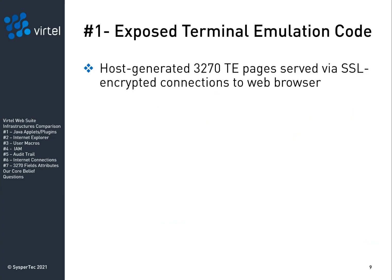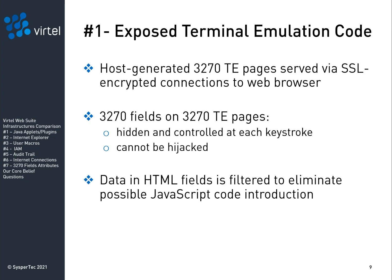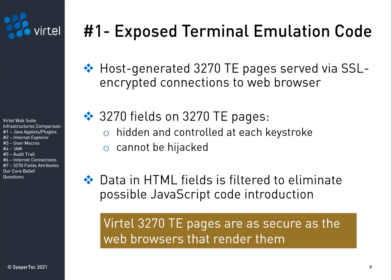As to the web page side of the Vertel solution, for each new 3270 screen, Vertel generates a new web page on the host, securely behind the host firewall, and then serves that page via secure SSL encrypted connections to the web browser for rendering. Once the 3270 terminal emulation pages are rendered by the browser, the 3270 fields on those pages cannot be hijacked, because they are hidden and controlled at each keystroke. Data entered in HTML fields to drive facilities such as IND$FILE undergo a special filtering process to eliminate the possible introduction of JavaScript code, which could be a way to take control of the web pages. Over the years, Vertel web pages have undergone the same hardening process that modern browsers have.